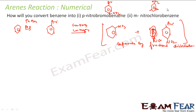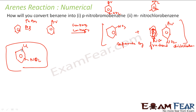For meta-nitrochlorobenzene, the nitro group is at the meta position. If I add chlorine first, I will get ortho and para products because chlorine has a +I effect and is an ortho/para director. But if I add the nitro group first, I will get chlorine at the meta position. So in this case I must add the nitro group first, because nitro has a −I effect and directs the next substituent to the meta position.